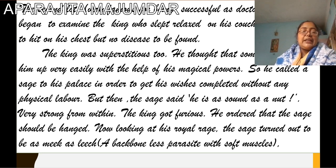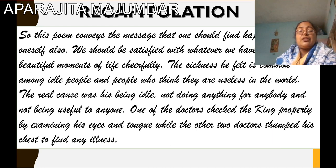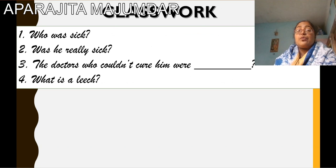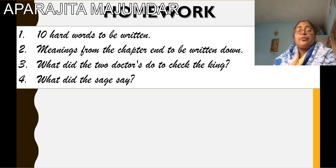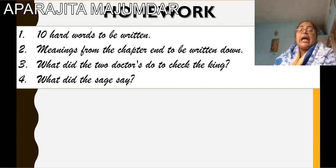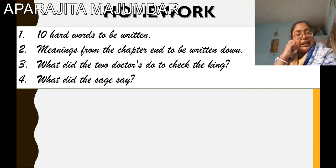So this part we have done yesterday — this is the recapitulation. Please go through it once. We had also done our classwork: who was sick, was he really sick, the doctors who couldn't cure him were done what. And our homework: 10 hard words with meanings, what did the two doctors do to check the king, and what did the sage say. This was the work done yesterday.